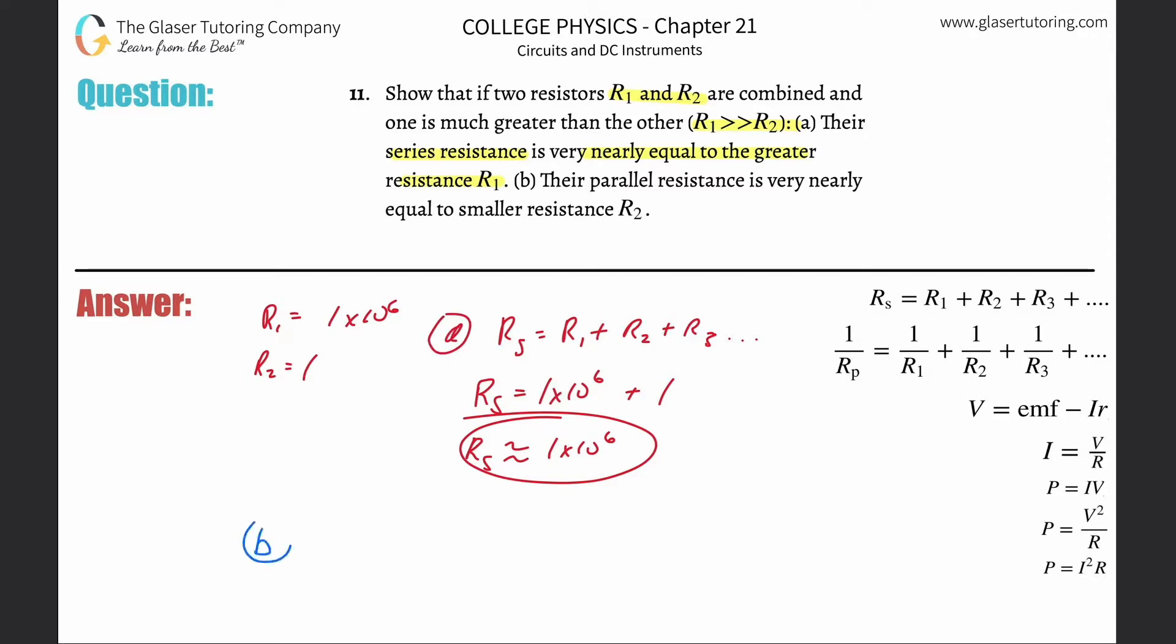And then for letter B now, what they're saying is show the opposite in parallel. So you know that 1 over Rp is going to be equal to now 1 over R1, which was 1 million in this case, 10 to the 6th, plus then 1 over R2, which was 1.